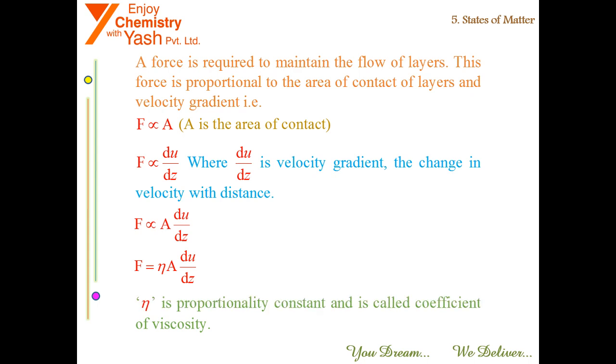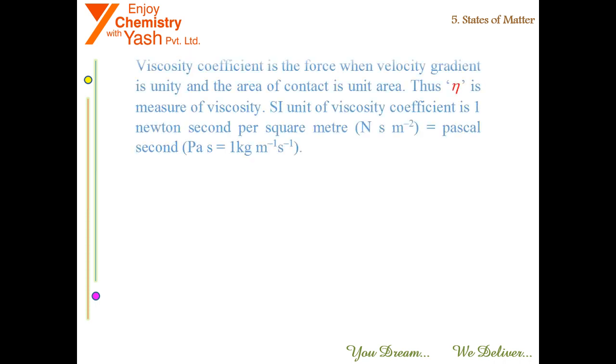Eta is the proportionality constant and is called coefficient of viscosity. Viscosity coefficient is the force when velocity gradient is unity and the area of contact is also a unit area. Thus eta is a measure of viscosity.